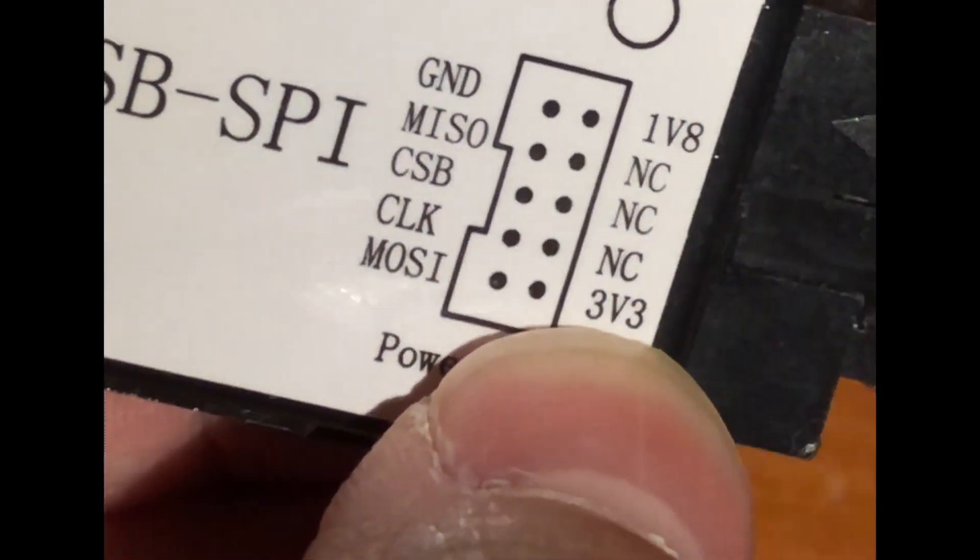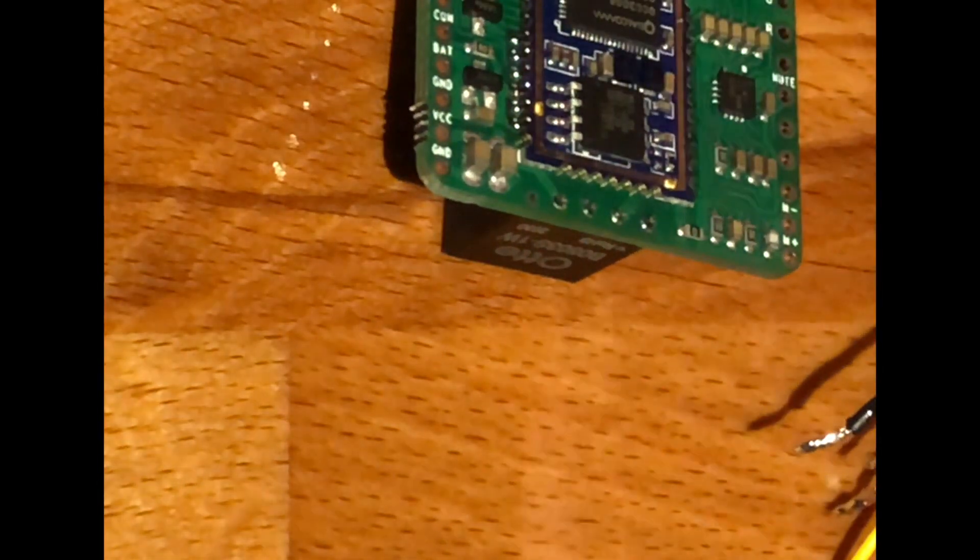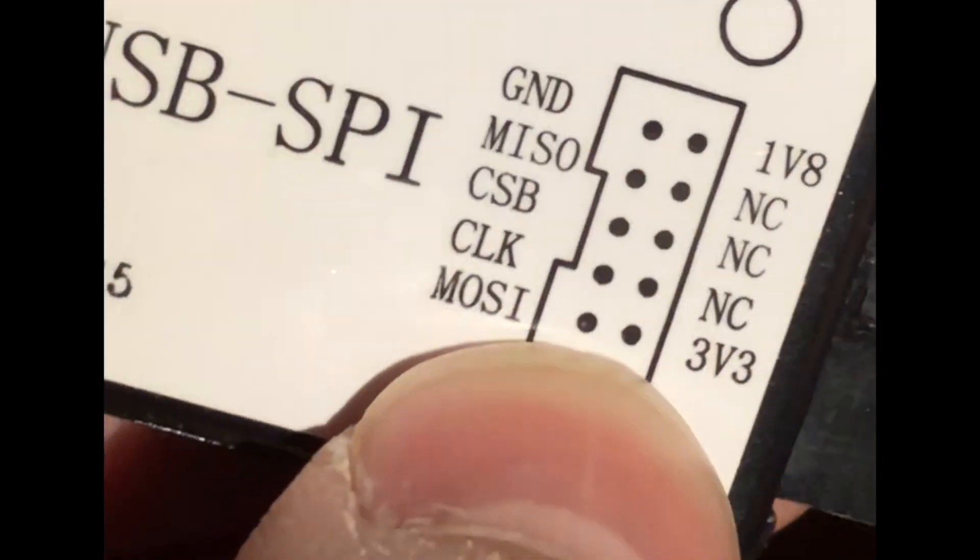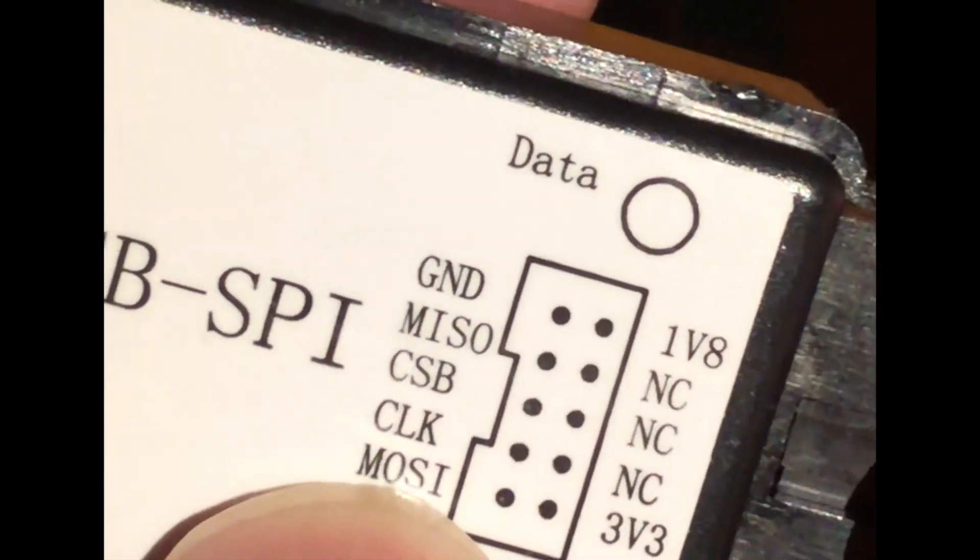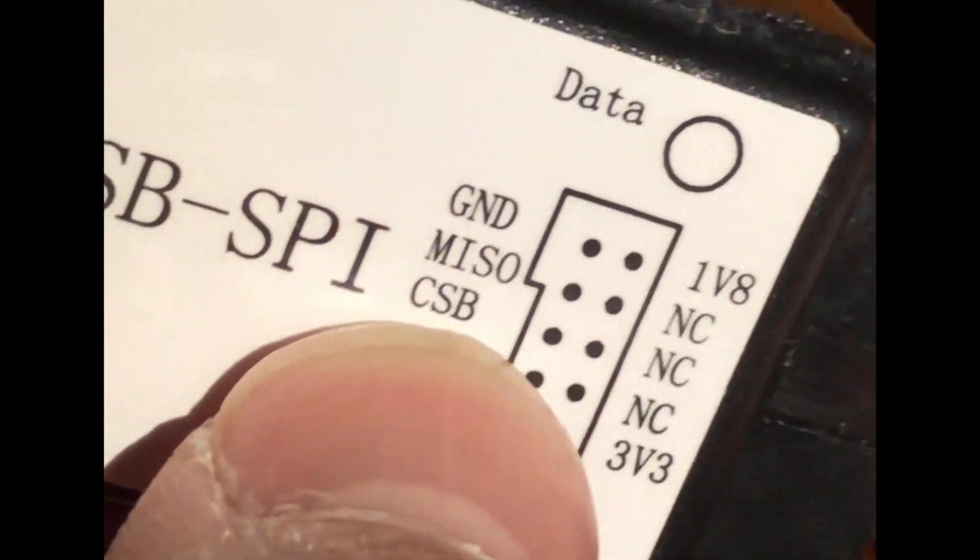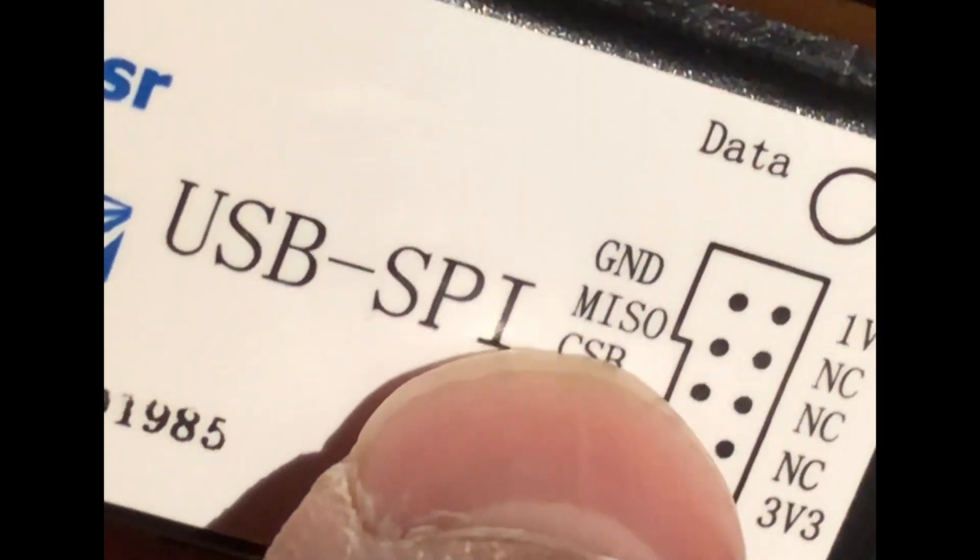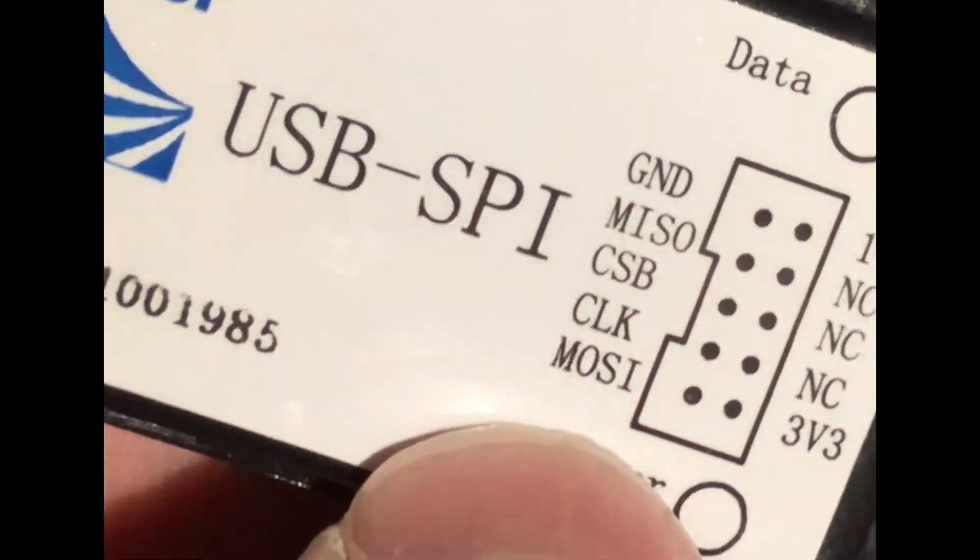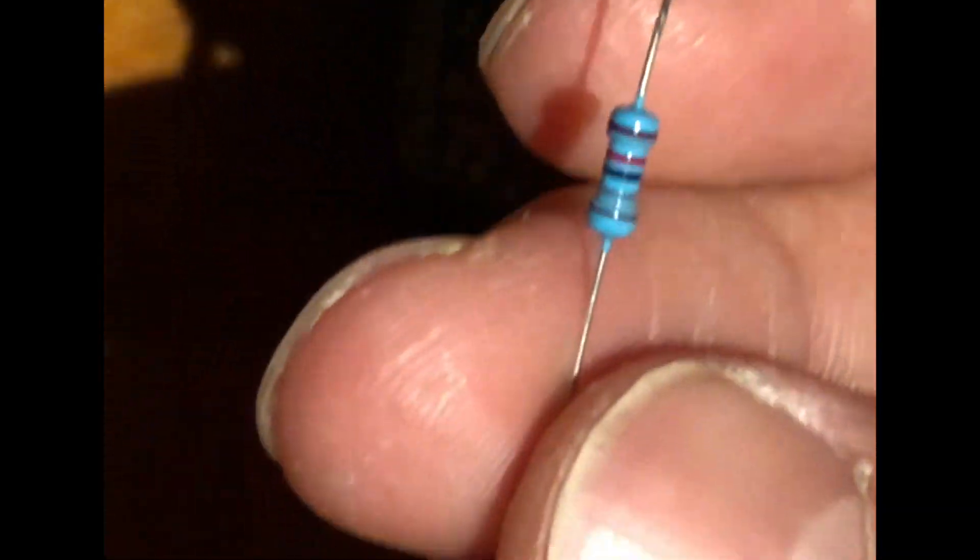I haven't had any problems so far. We're going to use master out slave in, clock, CSB which is chip select or board select, clock, and master in slave out. So this is basically an SPI connection. What you'll need to do is get a 10k or larger resistor, maybe 10 to 50 to 100k.